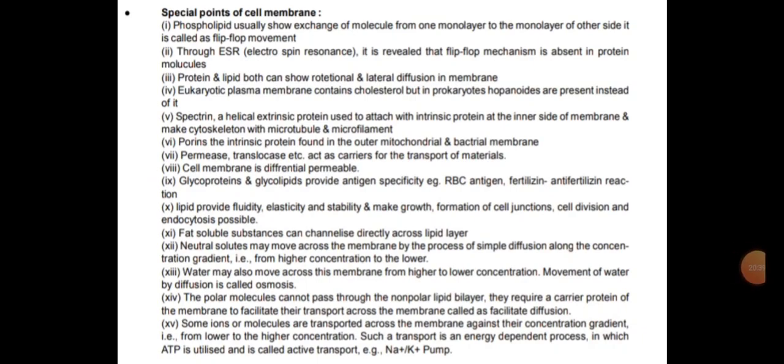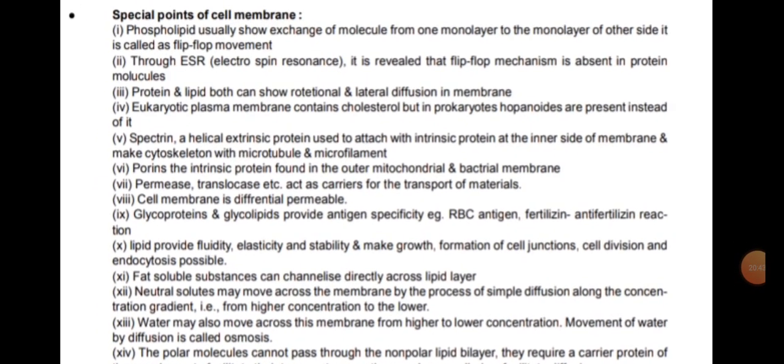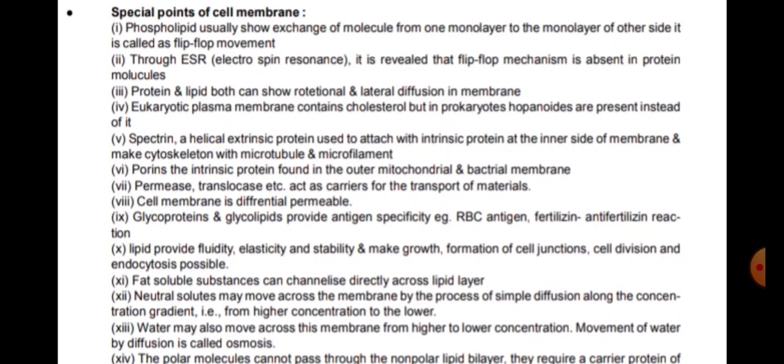Some special points of cell membrane: phospholipids usually show exchange of molecules from one monolayer to another, called flip-flop movement. Electron spin resonance reveals that flip-flop mechanism is absent in protein molecules. Both protein and lipid can show rotational and lateral diffusion in the membrane. Eukaryotic plasma membrane contains cholesterol, but in prokaryotes hopanoids are present instead of cholesterol.